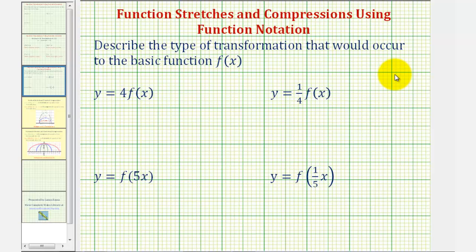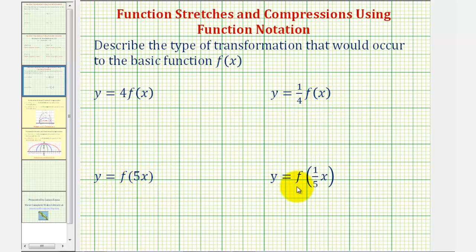We want to describe the type of transformation that would occur to the basic function f of x. We're given y equals four times f of x, y equals one-fourth times f of x, y equals f of five x, and y equals f of one-fifth x.